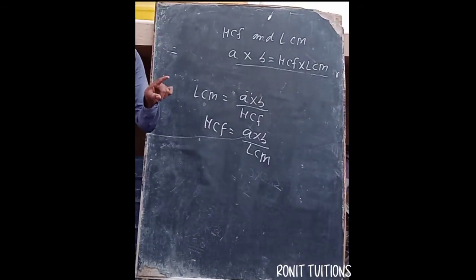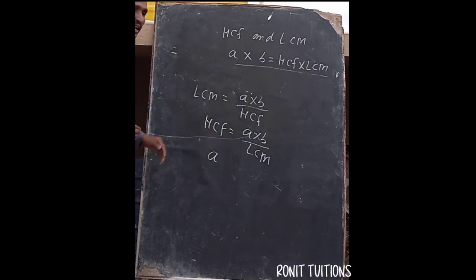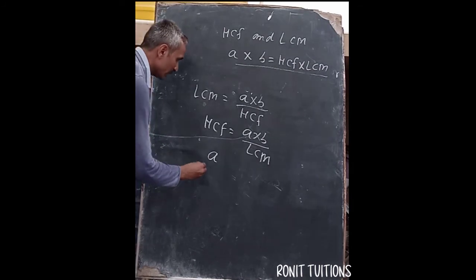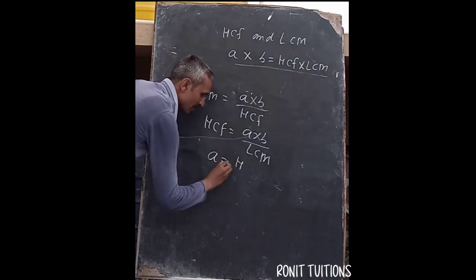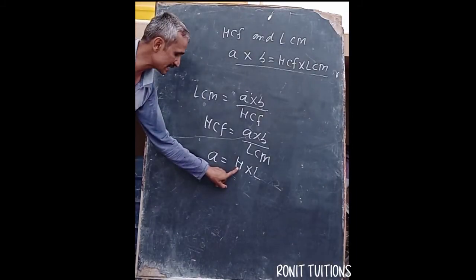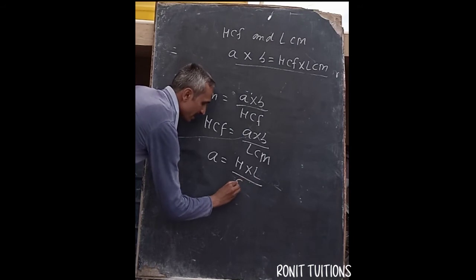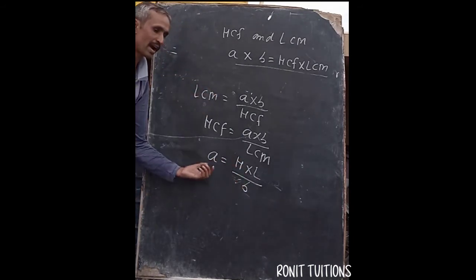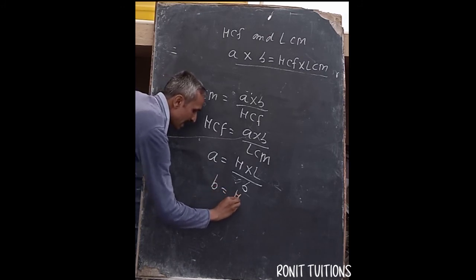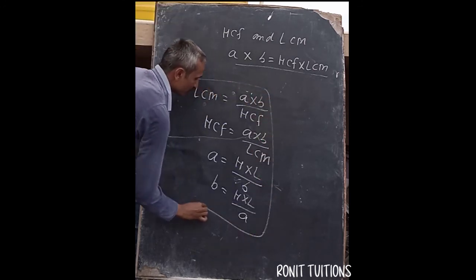Suppose you know the HCF and LCM and want to find one of the numbers. If you want to find number A, write: A = (HCF × LCM) / B. If you want to find number B, write: B = (HCF × LCM) / A. All these formulas are derived from the one main relationship: A × B = HCF × LCM.